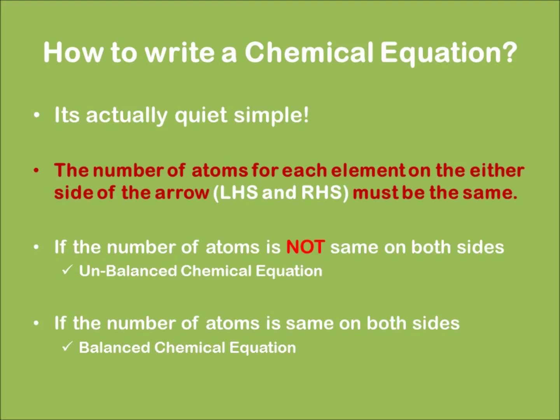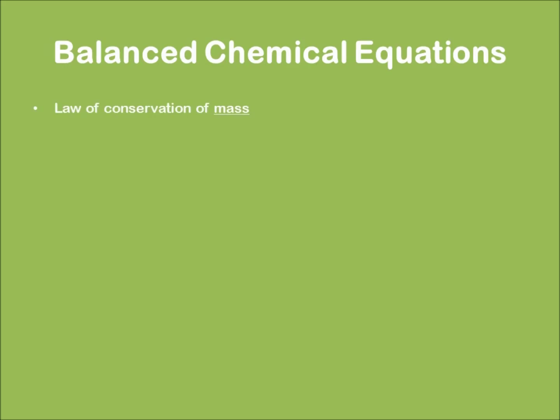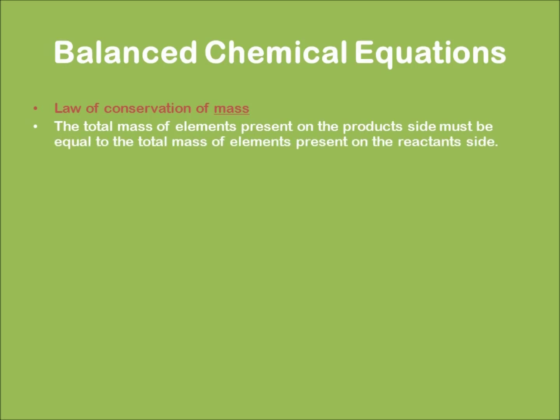Now it is time to learn about a balanced chemical equation. This actually comes from the law of conservation of mass, which states that the total mass of elements present on the product side must be equal to the total mass of the elements present on the reactant side. In other words, it says that the number of elements on either side of the arrow must be the same.